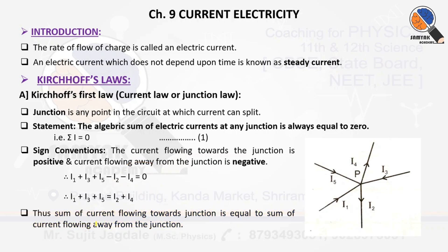I hope you got Kirchhoff's current law, which is also referred to as the junction law, abbreviated as KCL. The statement: the algebraic sum of electric currents at any junction is always equal to zero — summation i equals zero. Currents traveling towards the junction are positive and those traveling away are negative. The sum of currents flowing towards the junction always equals the sum of currents flowing away.